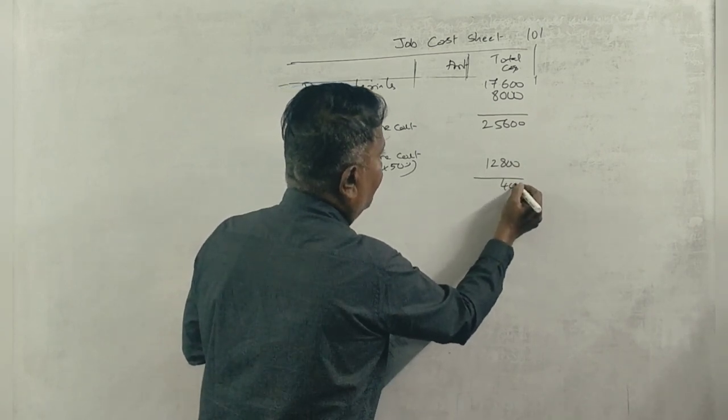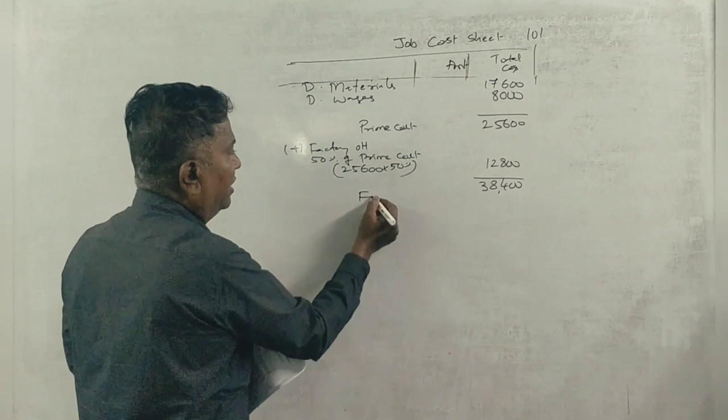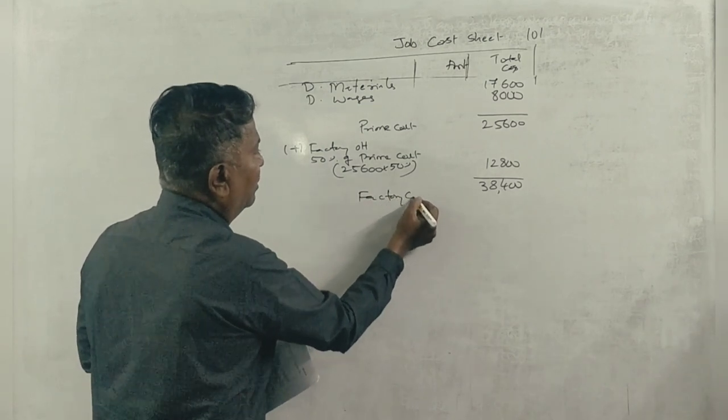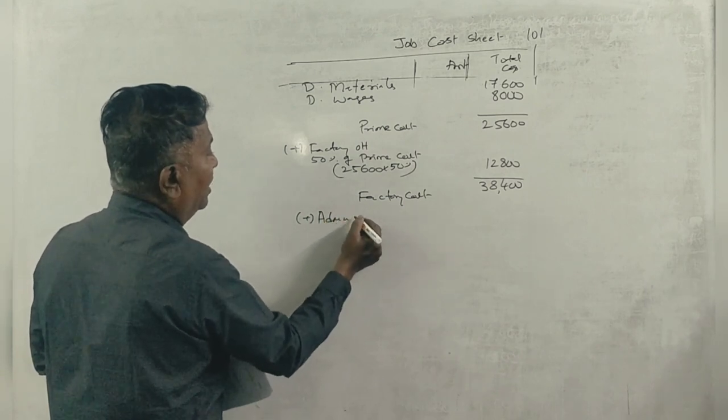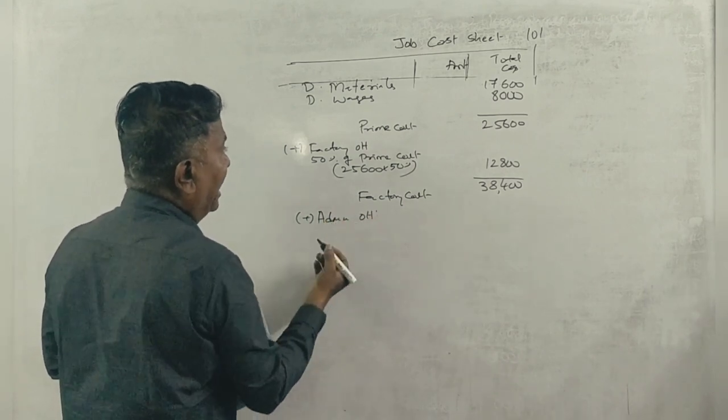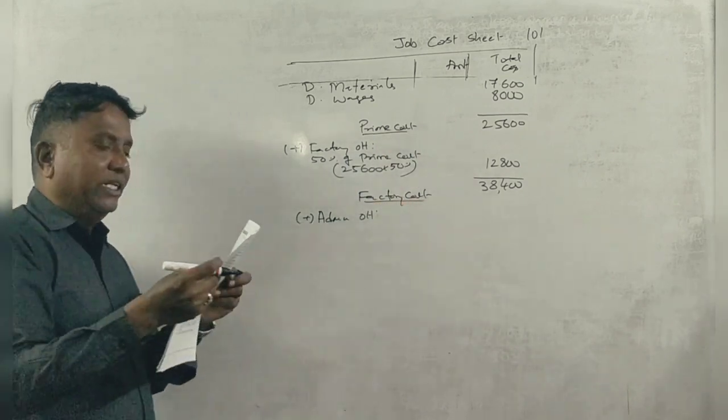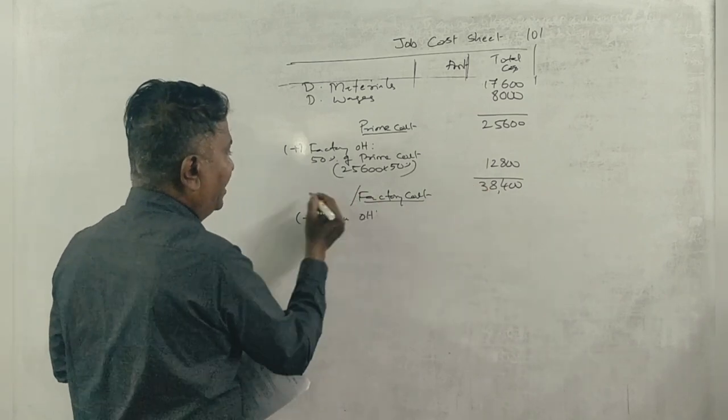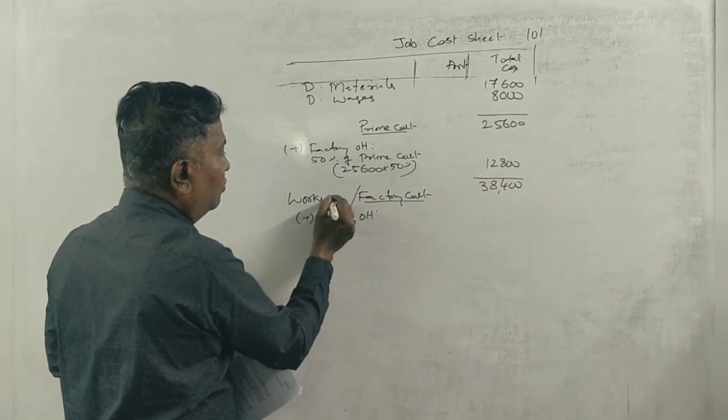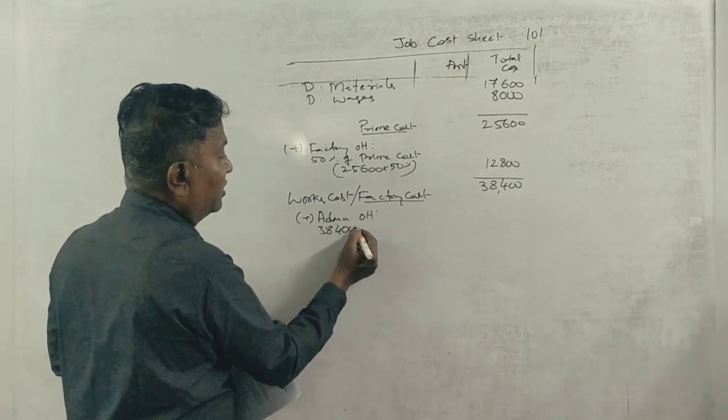I'll get 38,400, so the first calculation is done. Now add the administration overhead or office overhead. It's 10% of works cost. The factory works cost is 38,400.